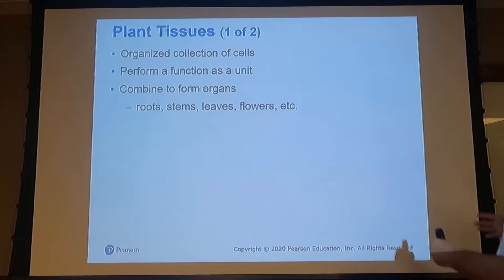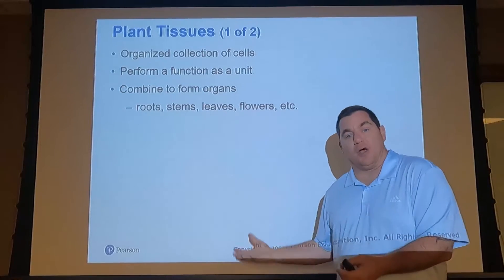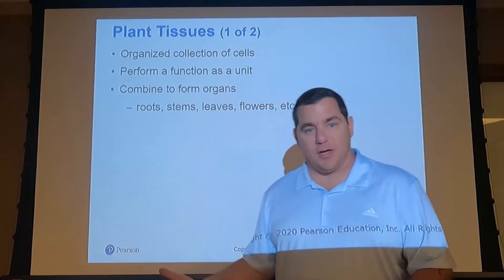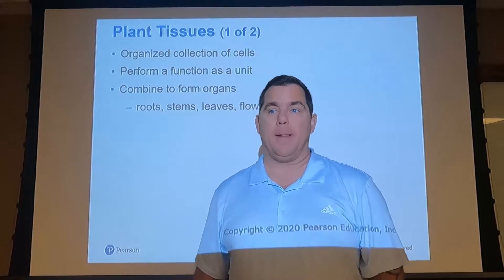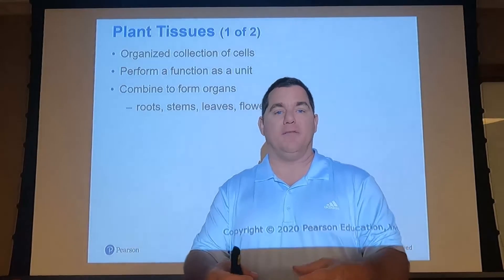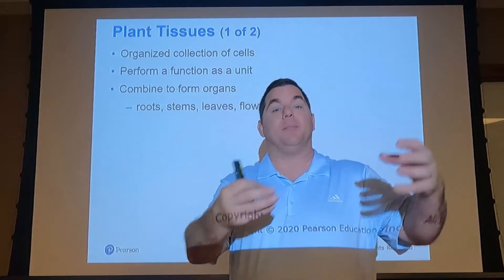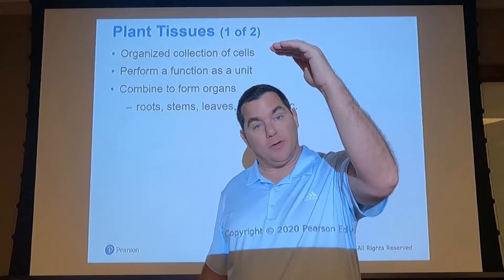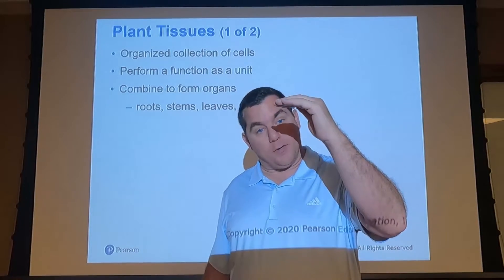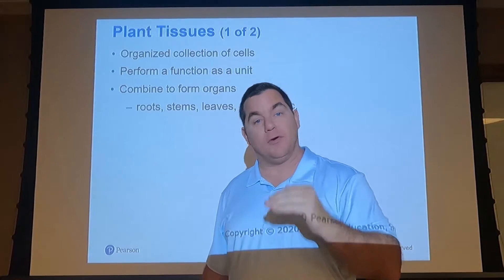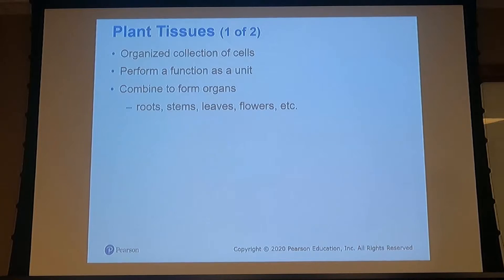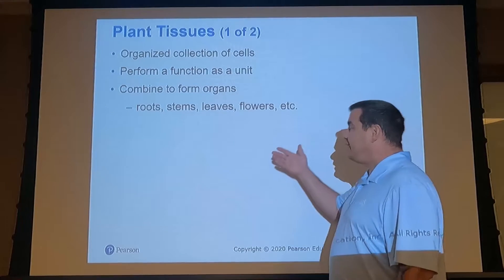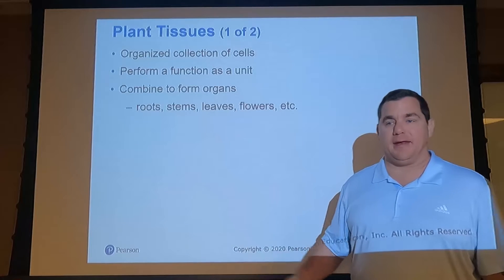Plant tissues are formed from collections of cells, and each cell is different — this is cell differentiation. Each cell performs a specific function or is a component of a tissue that makes up an organ. So cells are part of tissue, tissue is part of an organ, and our organs include roots, stems, leaves, and flowers.